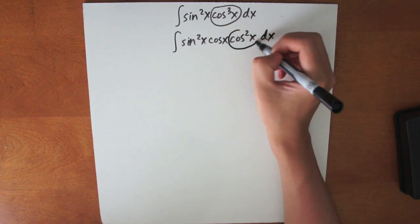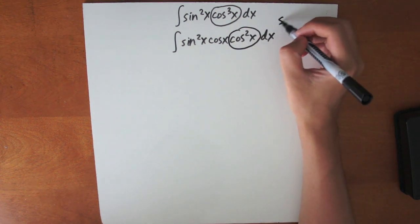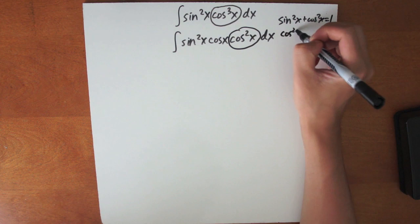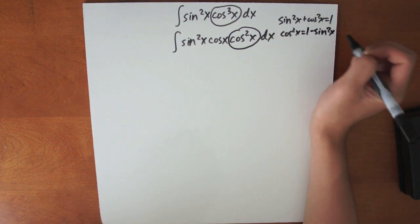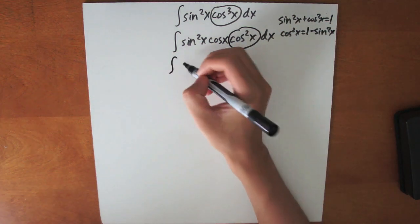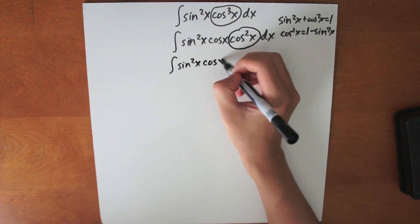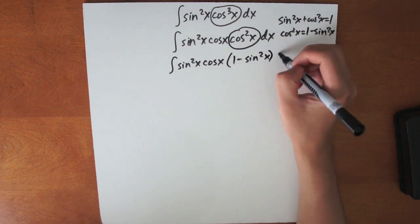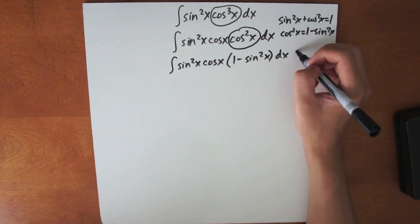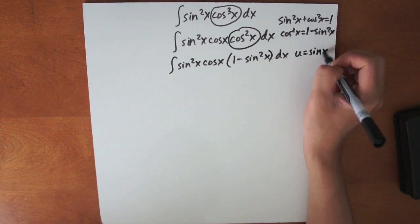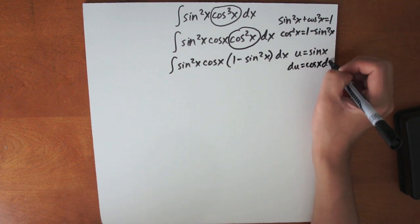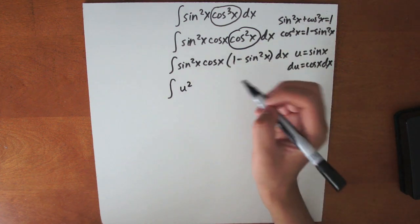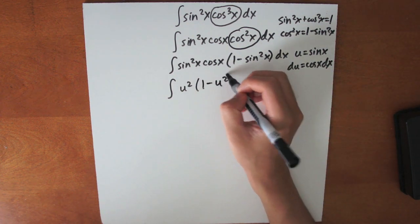We then must write cosine squared x in terms of sine. Using the trig identity sine squared x plus cosine squared x equals 1, we see that cosine squared x equals 1 minus sine squared x. So substituting back in, it becomes sine squared x times cosine x times (1 minus sine squared x) dx. We then use the substitution u equals sine x, so du equals cosine x dx.